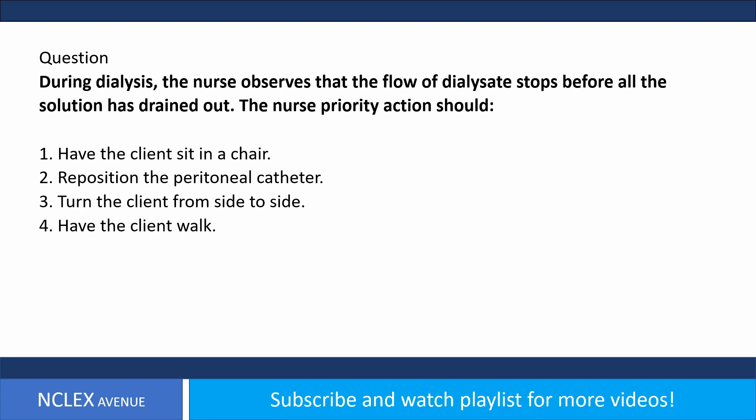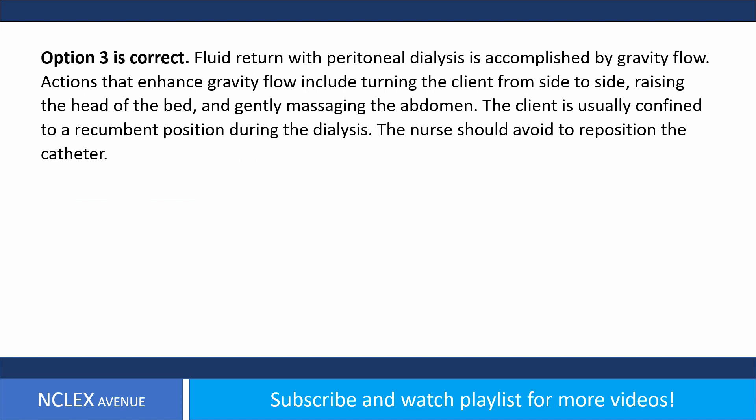Answer: option three is correct. Fluid return with peritoneal dialysis is accomplished by gravity flow. Actions that enhance gravity flow include turning the client from side to side, raising the head of the bed, and gently massaging the abdomen. The client is usually confined to a recumbent position during dialysis. The nurse should avoid repositioning the catheter.